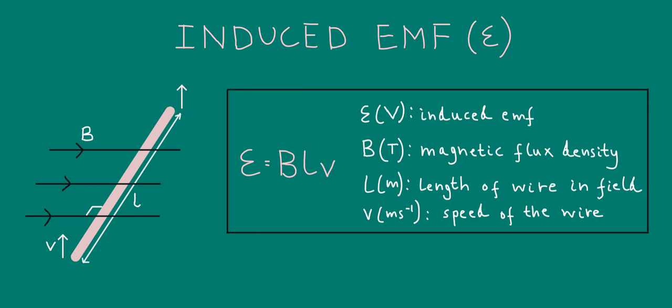And induced EMF, just like EMF that you've met previously in your studies of electricity, is measured in volts. The induced EMF is a potential difference here. The induced EMF is proportional to each of these three quantities: B, L, and V. For example, if the speed of the wire doubles, the induced EMF will double as well. If the wire were to suddenly stop moving, so if V were to be zero, then the induced EMF would disappear.